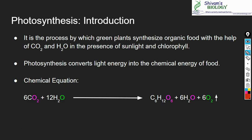Photosynthesis converts light energy into the chemical energy of food. The light energy comes from the sun and is converted into chemical energy stored in food — that is glucose, or we can say sugars. On earth, the sun is the main source of energy, and whatever form of energy we see around us is obtained from the sun. Photosynthesis is the main process which fixes and converts this energy into a usable form for us.